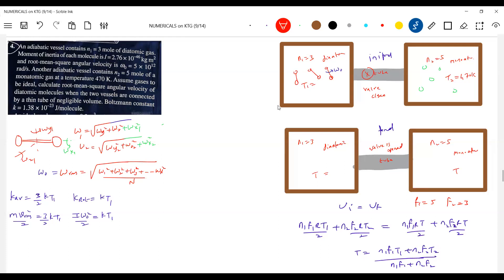Calculate root mean square angular velocity of diatomic gas molecule when two vessels are connected. Finally what will be the temperature of this? The diatomic gas molecule which is present here will have root mean square angular velocity. Should be equal to I omega squared equal to kT. So dividing these two also will get it.